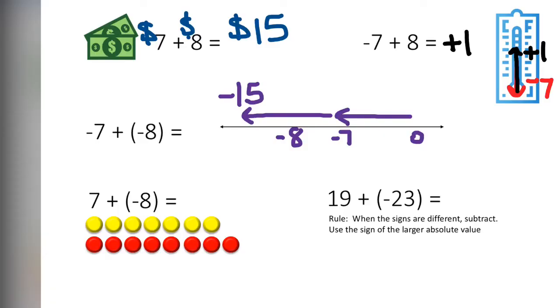Next, we have colored counters. Where we have 7 positive and 8 negative. We match up all of the zero pairs, eliminating or subtracting. Leaving us with only one negative. One red.